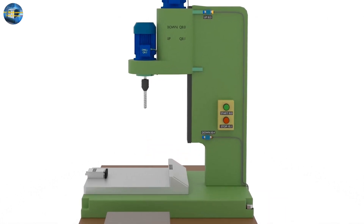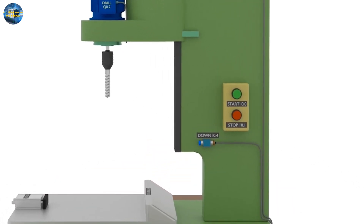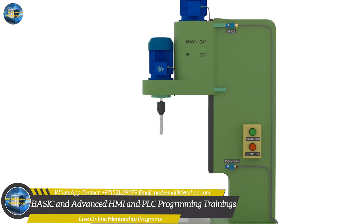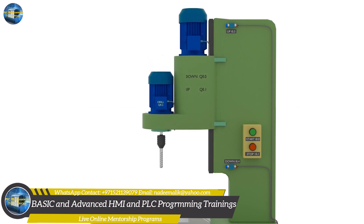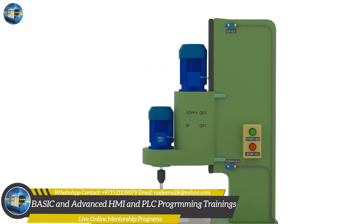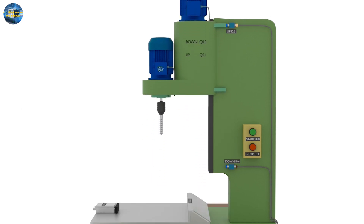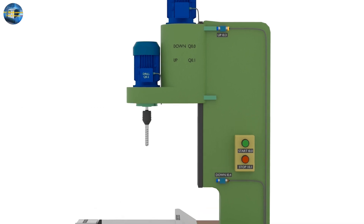We have a start I0.0 and stop I0.1 push buttons to start and stop the drill machine. The drill head will move up and down with the PLC outputs Q0.0 and Q0.1.